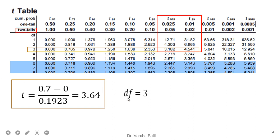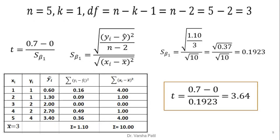The t value is 3.64 and degree of freedom is equal to 3. Now we can check the t-table. We have to check the two-tailed test and the degree of freedom is on the row side, equal to 3. We will check in which range this value falls. The t value is 3.64, and we can check that it comes between 3.18 and 4.5, that is between 0.05 and 0.02, which is between 95% and 98% confidence. This is a rough range; in the next slide we can go for the detailed range.